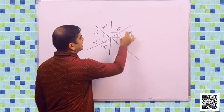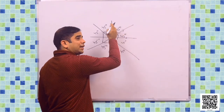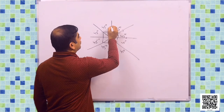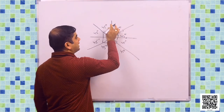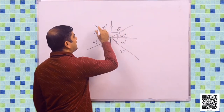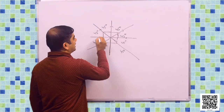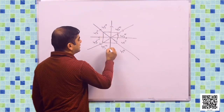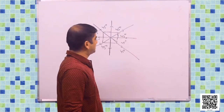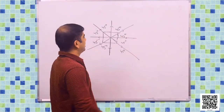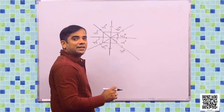From this direction to this direction it goes 45 degrees. From here to here, another 45 degrees. From here to here, another 45 degrees. Same way it turns 45 degrees and comes back to this position — the initial position. So each turn is of 45 degrees.